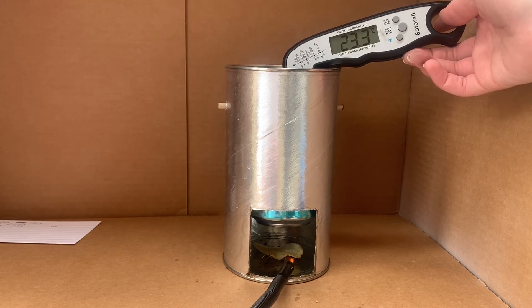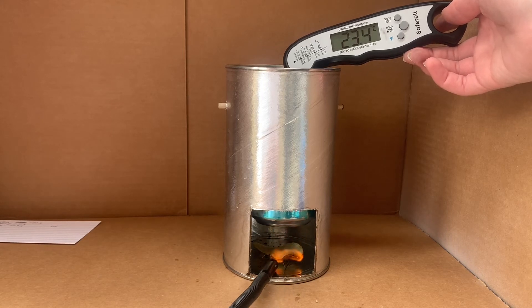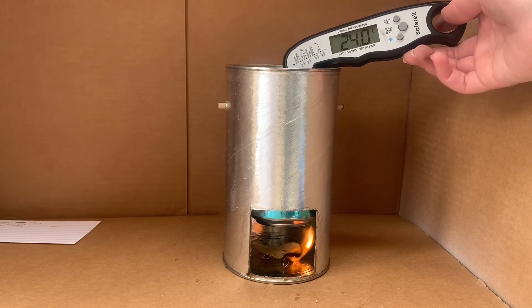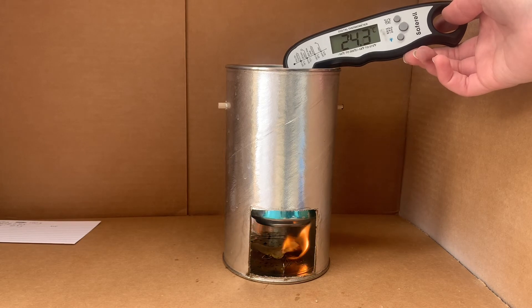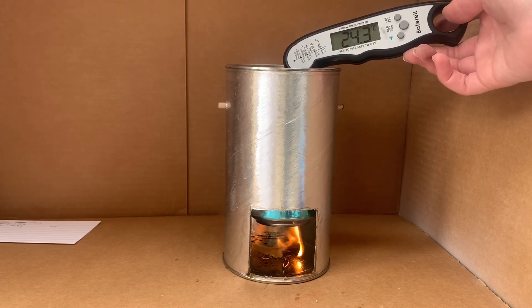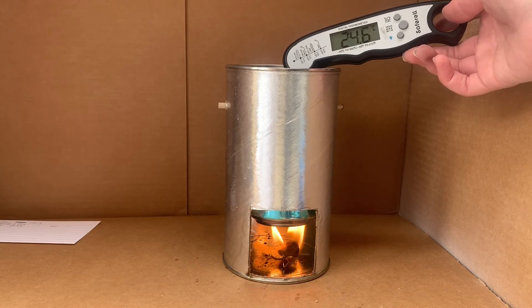A couple things to note about this experiment is that there is a lot of room for error because the heat is not being trapped inside of that container. So not all of the heat is being absorbed into the water. Some of the heat is leaving on top, which creates room for error because we're assuming that all of the heat is transferred completely to the water, which is not true.